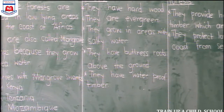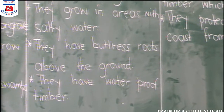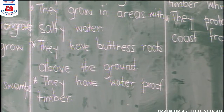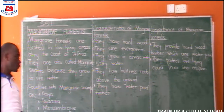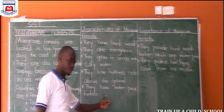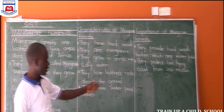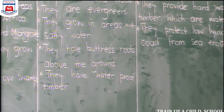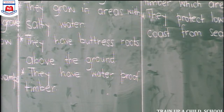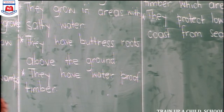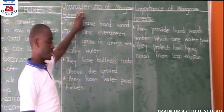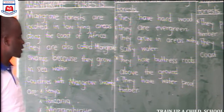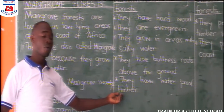Another feature of mangrove forests, which is special compared to other vegetation zones: they have waterproof timber. Waterproof timber is resistant to water. So when you make boats from mangrove forests, they cannot get destroyed by water. They are resistant to water, that's why they are called waterproof.